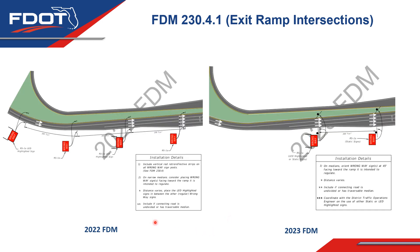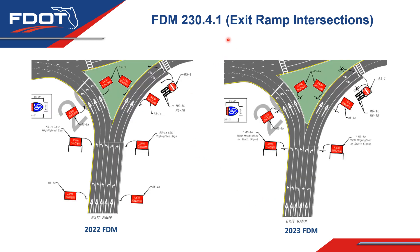The next set of exhibits were updated very similar to the last slide. The 2022 version has four sets of wrong way signs, and in the 2023 version there are the standard two sets of signs — one being static and the other being either static or highlighted depending on the results of coordination with the district traffic operations engineer. The last exhibit regarding exit ramp intersections also shows the 2022 and the 2023 version. This exhibit shows a ramp coming off of a diverging diamond interchange, and the same changes were made to this exhibit.